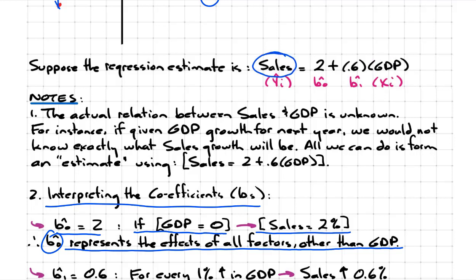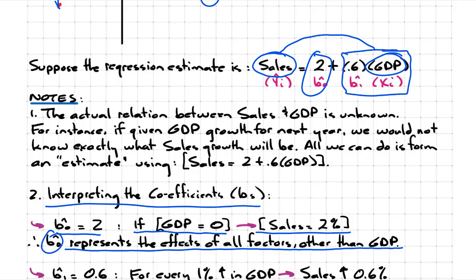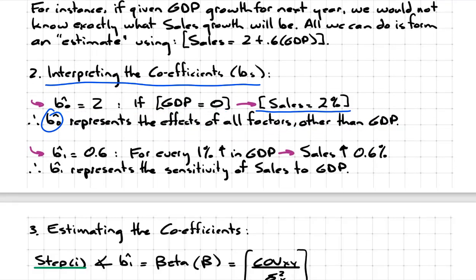Corporate sales is affected by a lot of factors — for example, consumer income, exports, imports, exchange rates, interest rates, inflation — but you only have one factor in this model. GDP only explains this portion. What about all those other factors that affect sales, like consumer income? Anything not captured by GDP — any factor affecting sales other than GDP — would be captured in that intercept term.